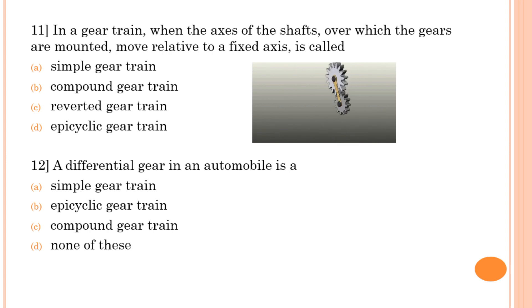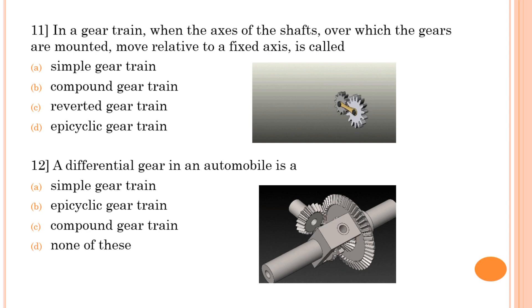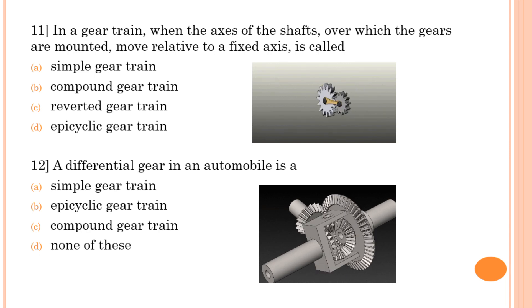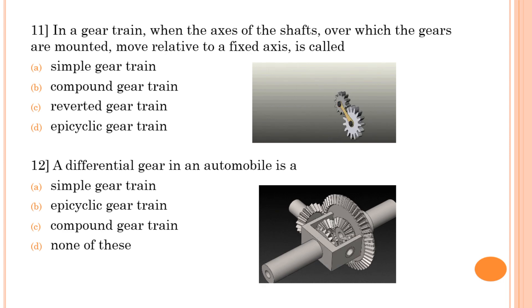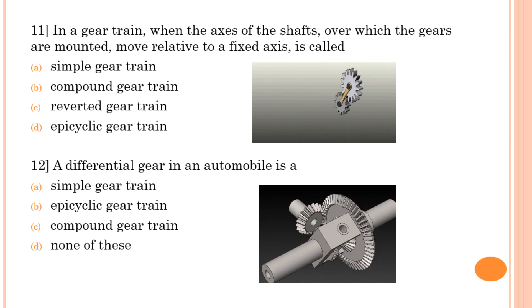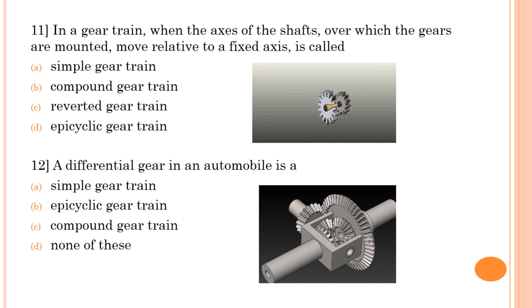Twelfth question: a differential gear in an automobile is — shown here with an animation of a differential gearbox used in automobiles and four-wheelers, particularly in the rear axle. A differential gearbox in an automobile is an epicyclic gear train. Option B is correct.